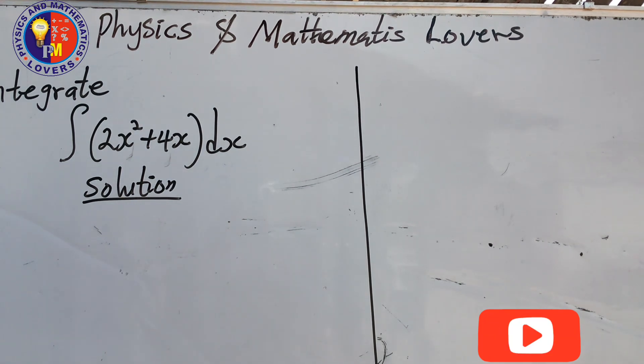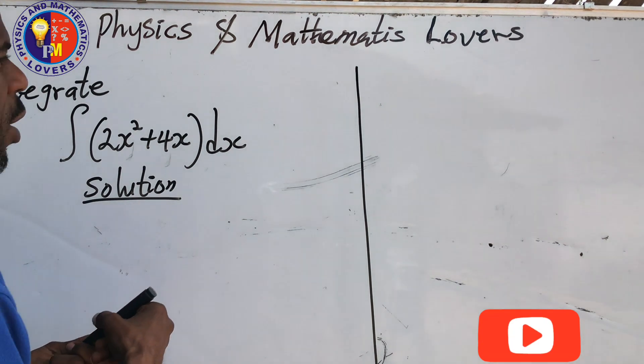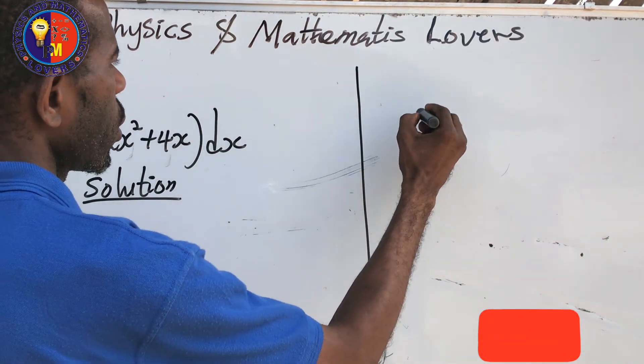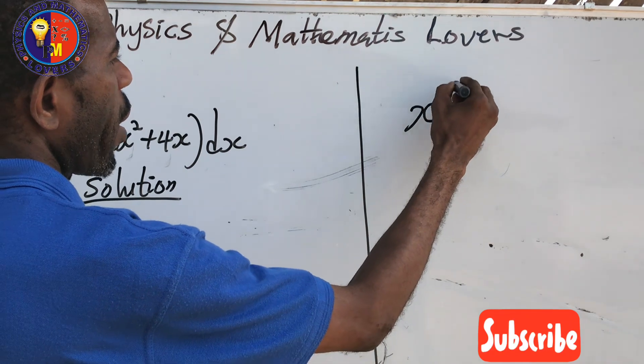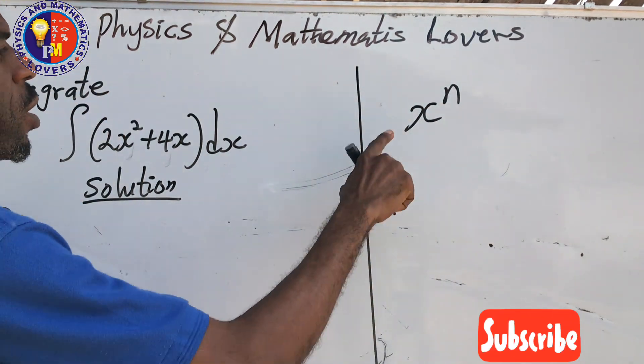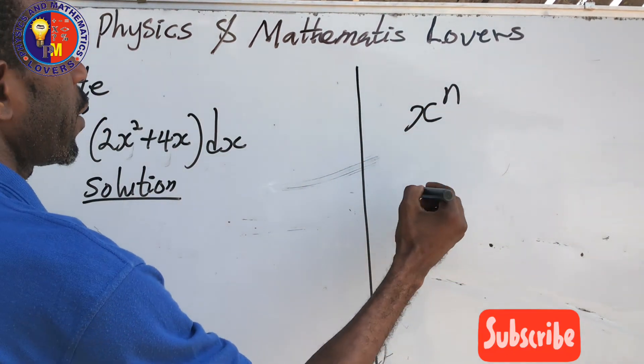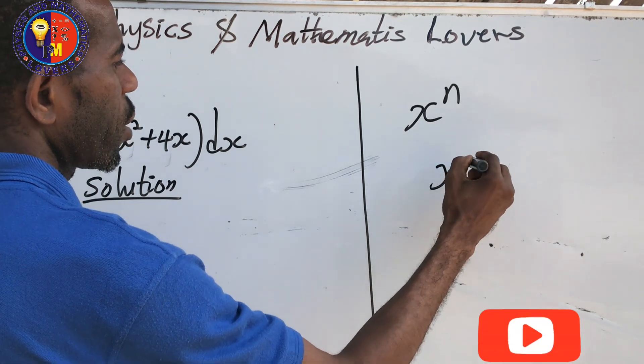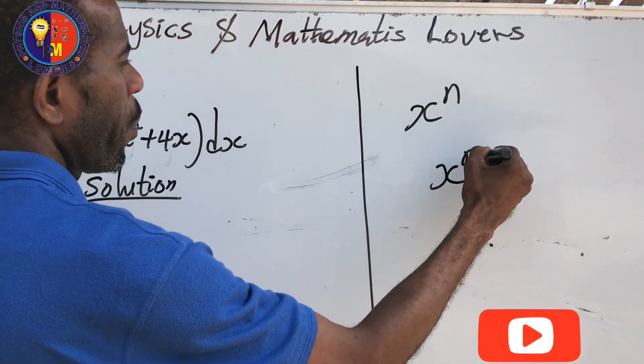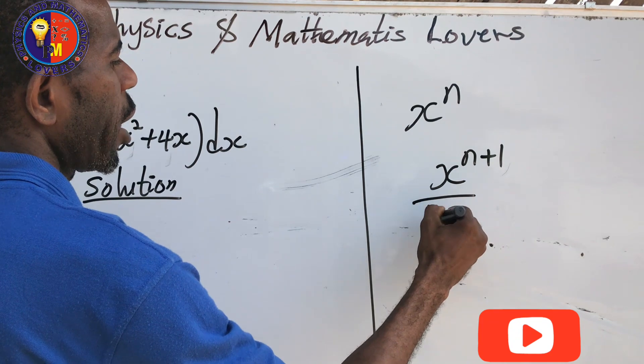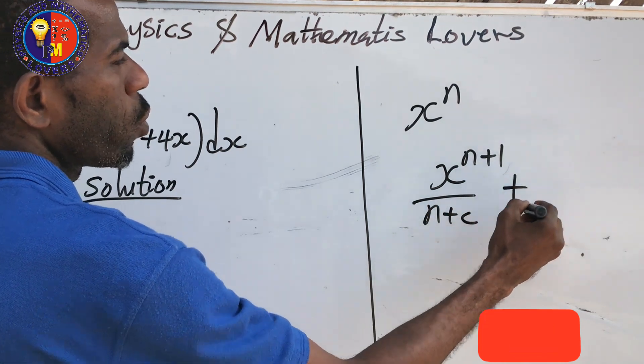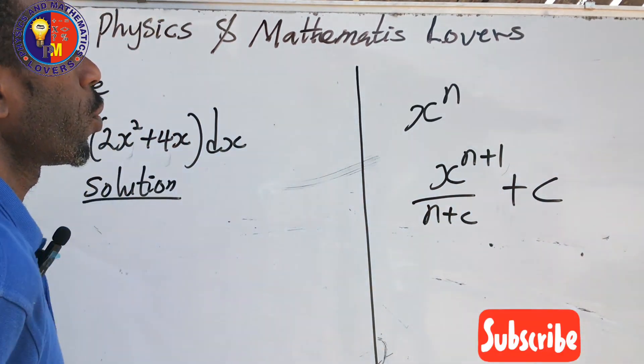Before we do this, I want to bring your mind back to when you want to integrate x raised to power n. If you want to integrate this, the integral value is written as x raised to power n+1, all over n+1, plus your constant.